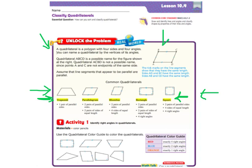Quadrilateral ABCD, this one right here, is a possible name for the figure shown at the right.